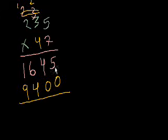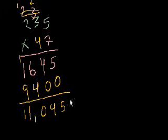And now we just add up everything. 5 plus 0 is 5, 4 plus 0 is 4, 6 plus 4 is 10, carry the 1. And 1 plus 1 plus 9, that's 11. So the answer is 11,045. Let's do another problem.